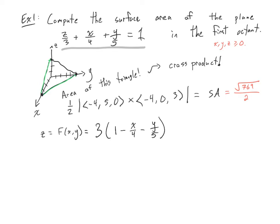And what I want to compute is both fx and fy. Both are not very bad, fx. I'm going to get 3 times negative 1 quarter, so negative 3/4. And fy is negative 3/5. So you should be able to read those off quite quickly.